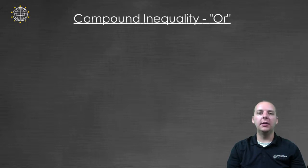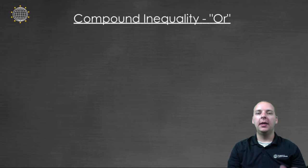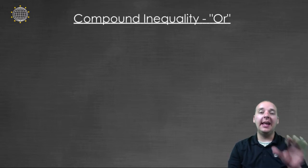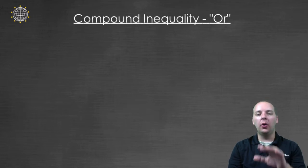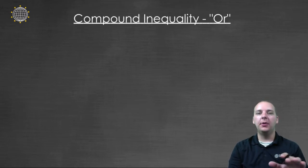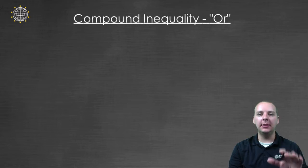In this video we're going to take a look at something called a compound inequality. There are two different types of compound inequalities: an AND compound inequality and an OR compound inequality. In a previous video we've already talked about the AND type; in this video we're going to talk about the OR type.